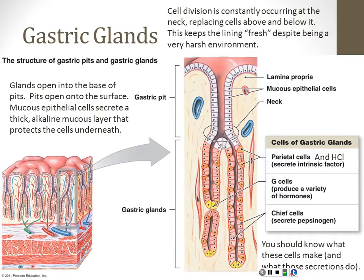That pattern happens all throughout the digestive tract, where the body protects itself from the nasty environment inside the lumen by constantly replacing cells, having them die off and be replaced. This is one of the reasons why radiation and chemotherapy cause a lot of GI symptoms — these cells are some of the most rapidly dividing cells in the body, and cancer treatments target rapidly dividing cells.